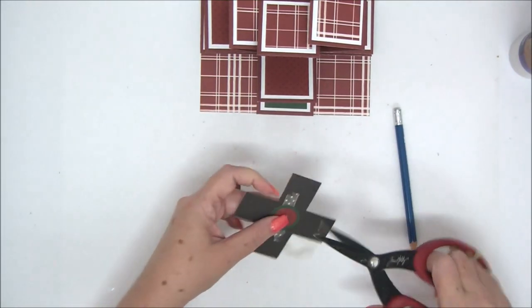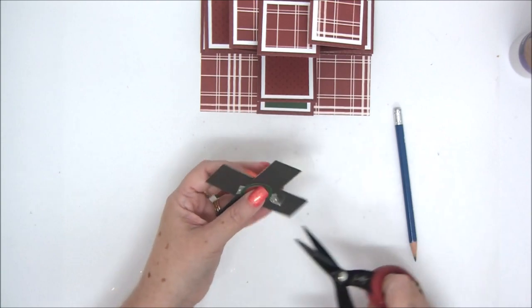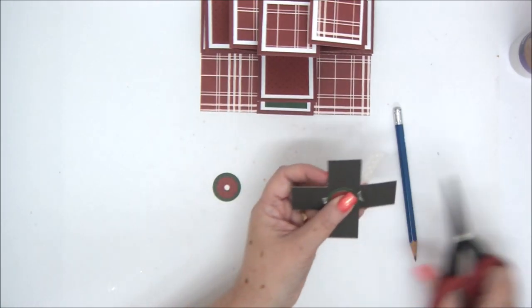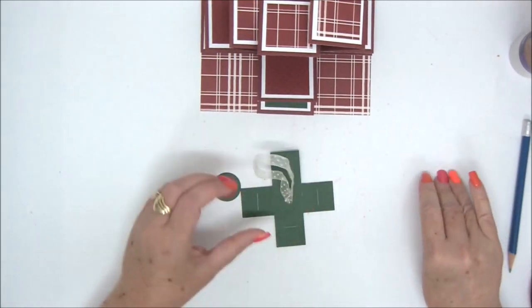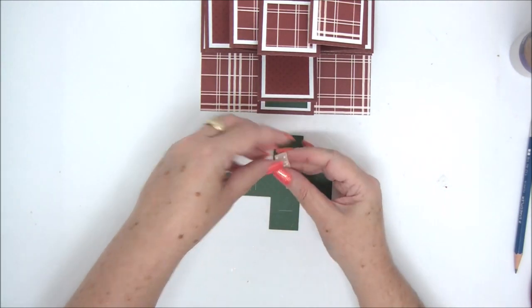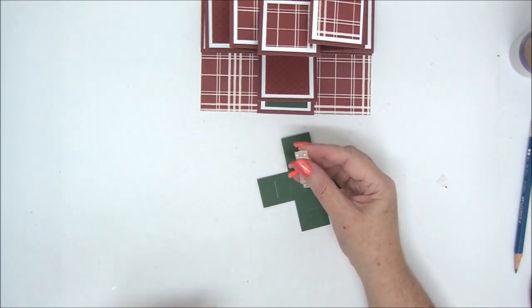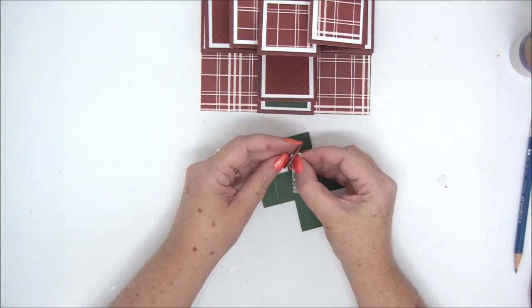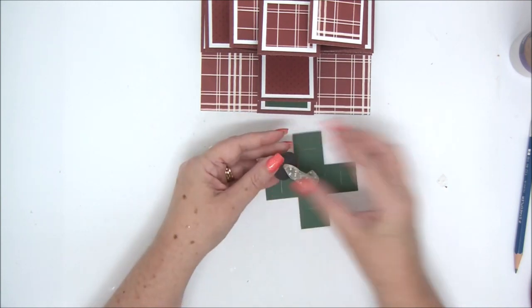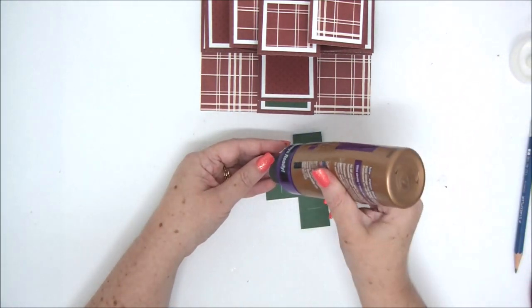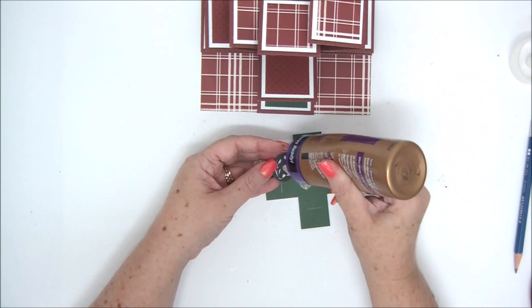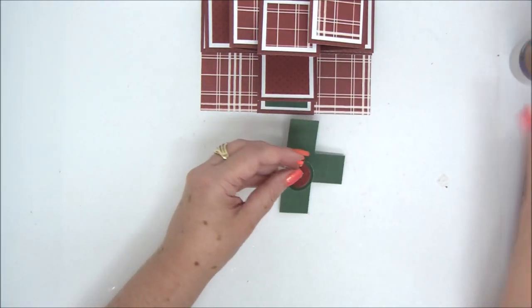Now you need to insert the ribbon through the hole in the second circle and attach the circle as well. So now you have a nice finish and the ribbon is secured to the cross. You can go ahead and attach the cross to the concertina.